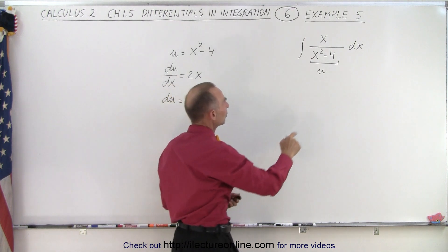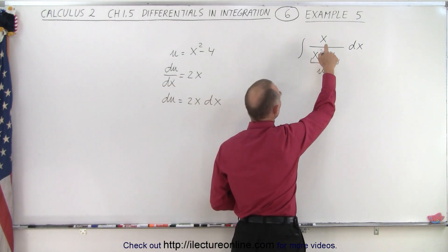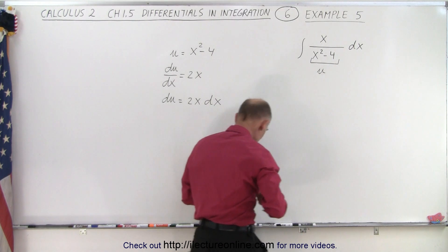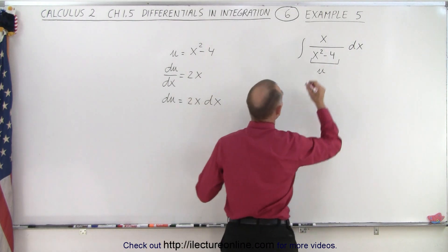Now notice that if I have a u in the denominator, I need a du in the numerator, and I need a 2x dx, which means I'm missing the 2, so I'm going to multiply by 2.